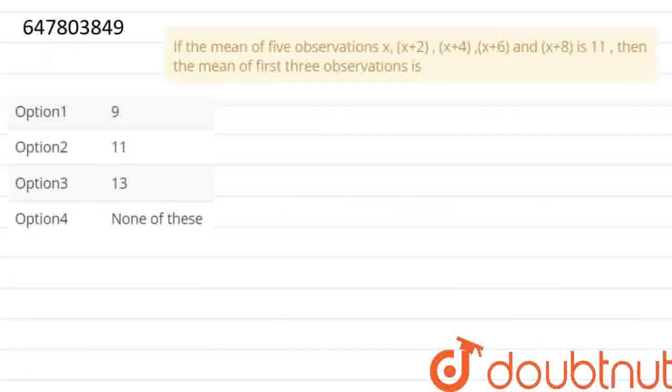So guys, this is the question and we have to solve it. The question is saying, if the mean of 5 observations x, x plus 2, x plus 4, x plus 6 and x plus 8 is 11, then find the mean of the first 3 observations.